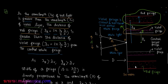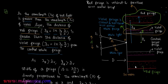Regarding the red fringe: the red fringe will be the widest and will be formed at the furthest position from the central white fringe. That means the red fringe is the widest and furthest with respect to the central white fringe.